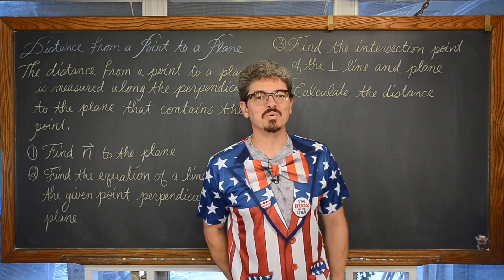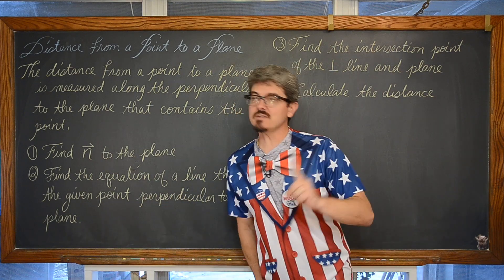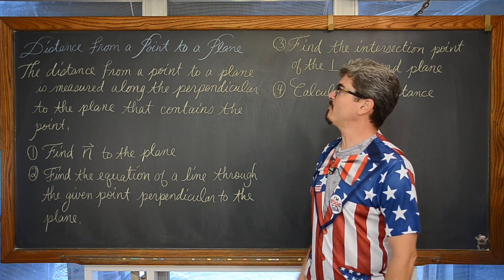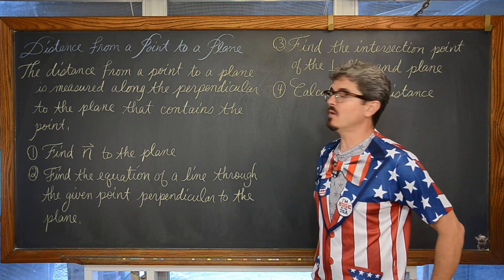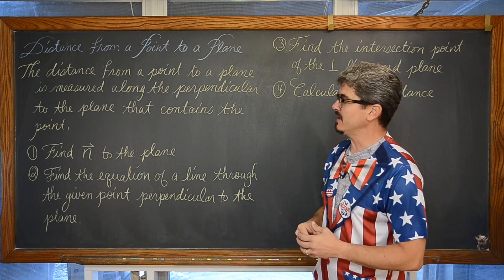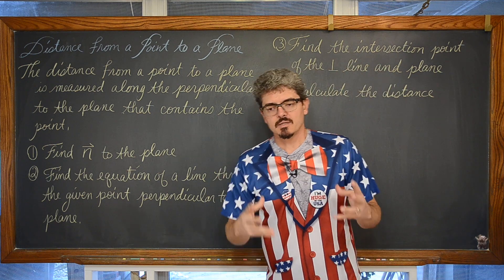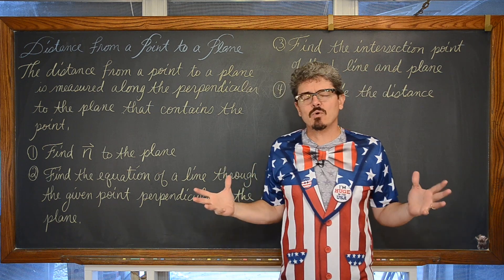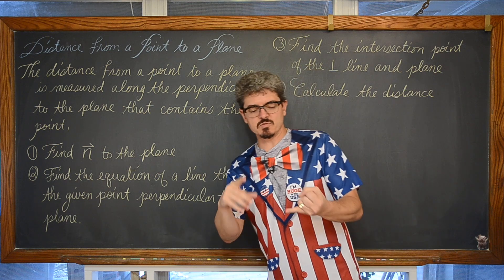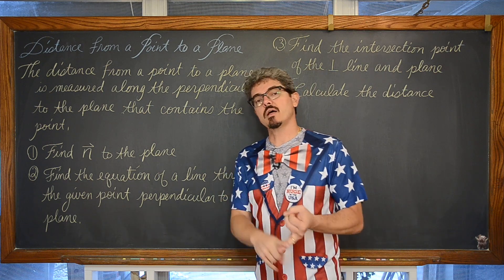Bam! Mr. Tarrou! In this math lesson we are going to do one example of finding the distance from a point to a plane — that shortest distance between a given point and a plane. And at its core this is exactly what we did in Algebra 1 when we were finding the distance between a given point and a line.